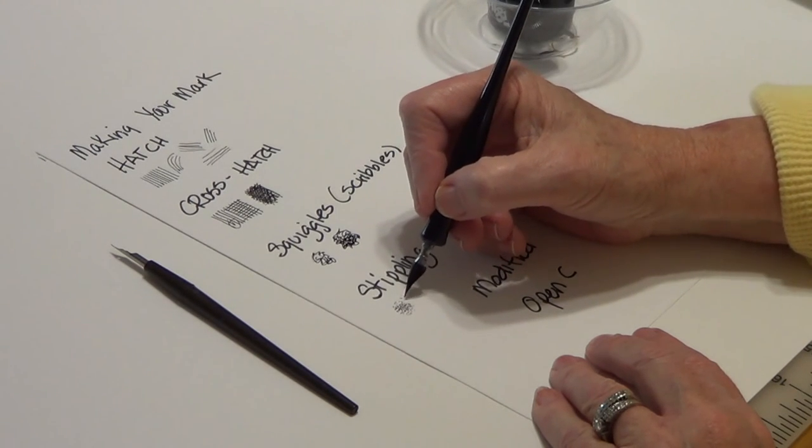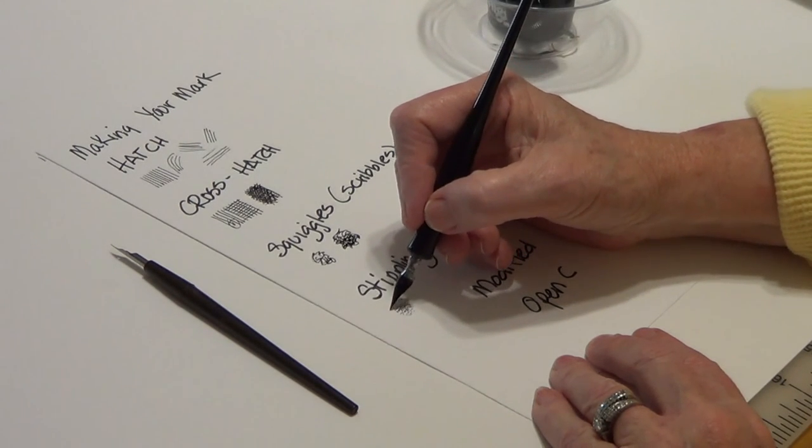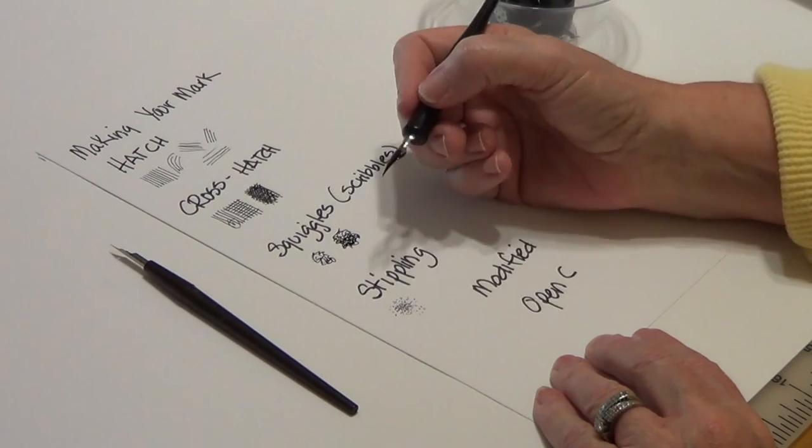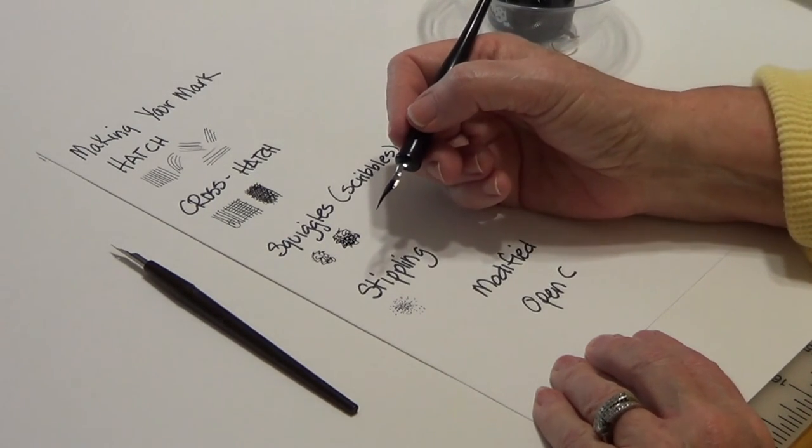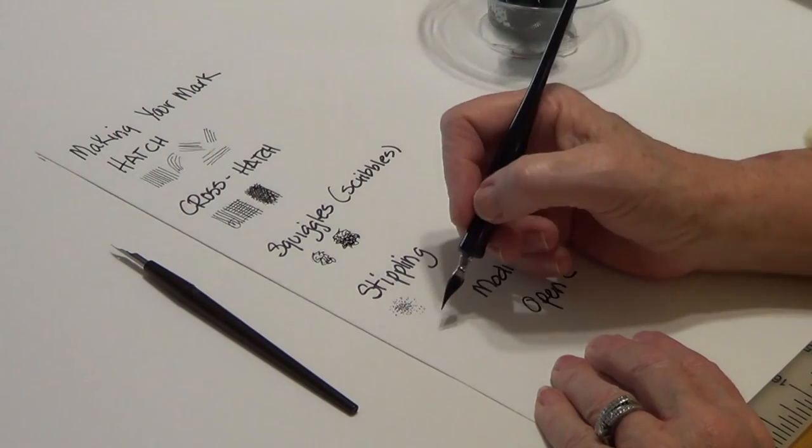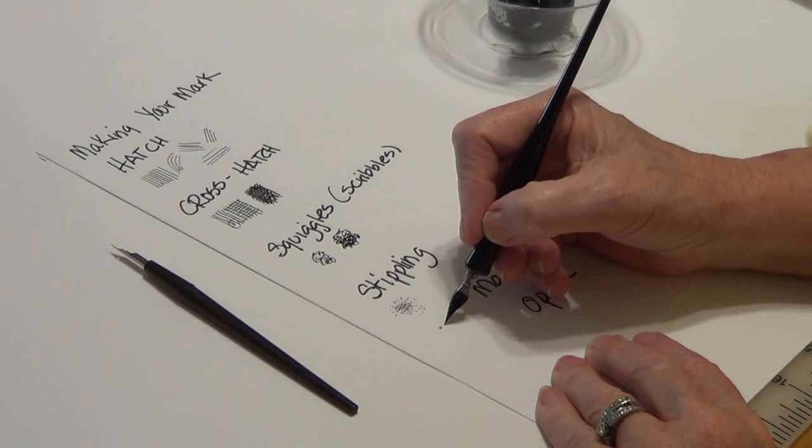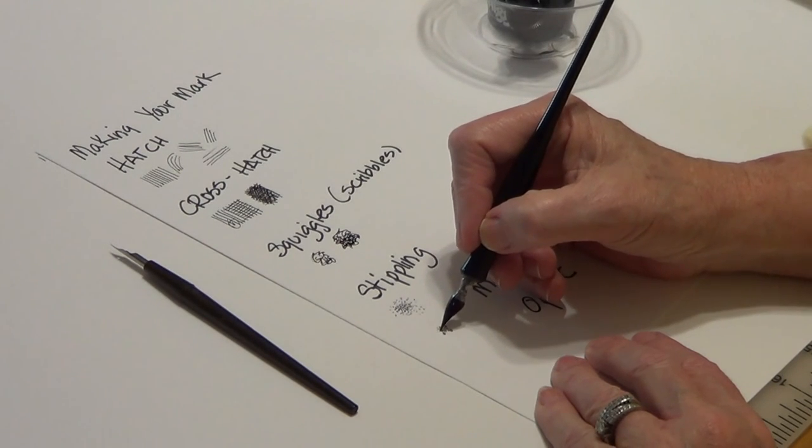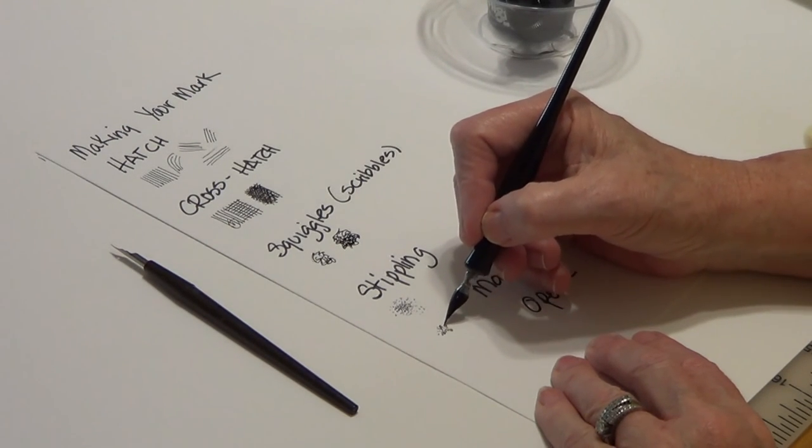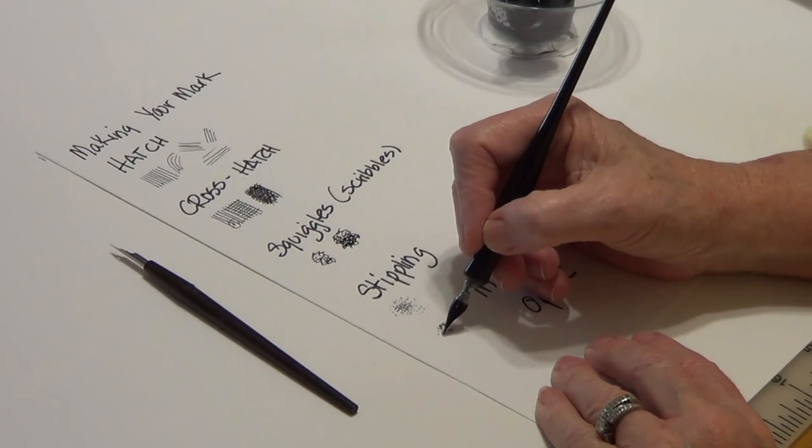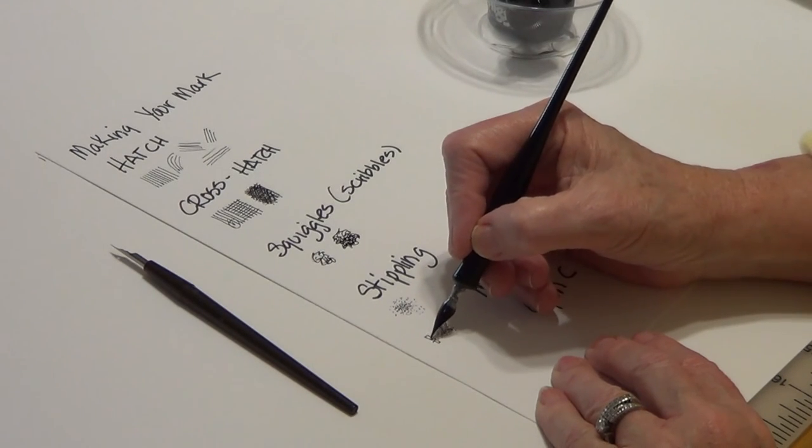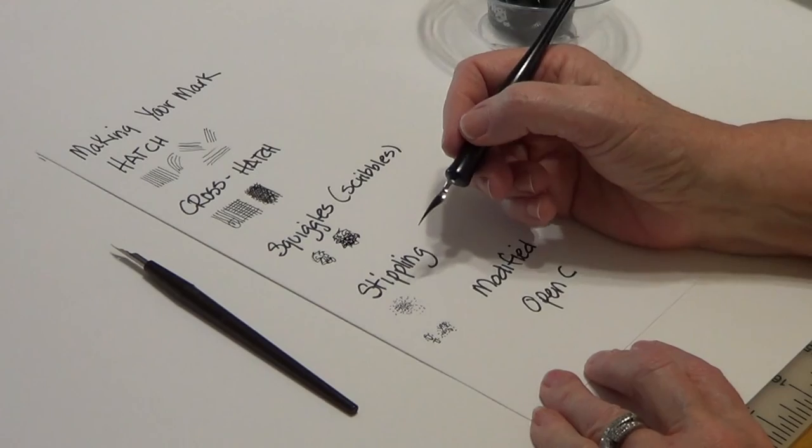I actually like stippling more than a lot of other things because it's very meditative. A modified stippling is you have little circles or maybe even some rectangles, and then you put your stippling in there. And you use that for texture. I have a toad that I did, and I used a lot of circles and then put my dots in. So that's a modified type of stippling.